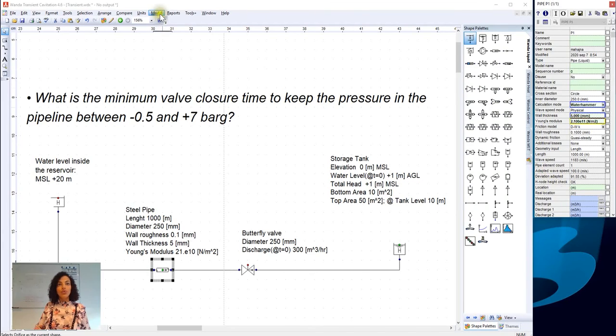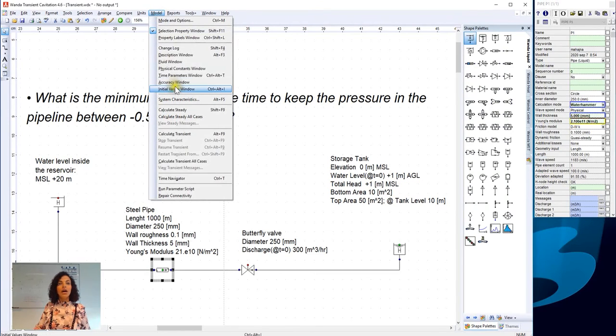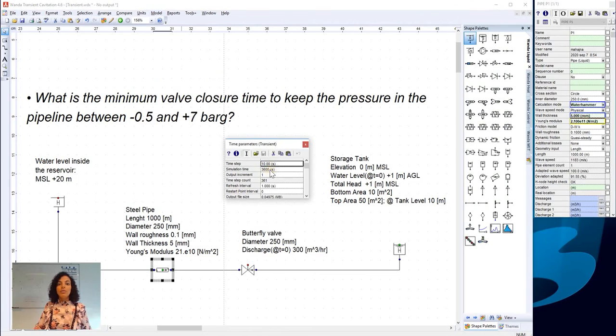Thus, we need to go to the time window. And we need to update the time step of the model. And we insert 0.05 as we have calculated. And immediately, we can see that the adapted wave speed is deviating from the calculated wave speed by 0.6%, which is very good accuracy for our model. We usually aim to have a deviation less than 15%.